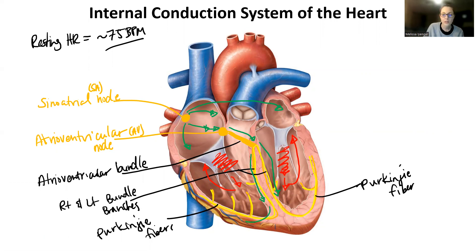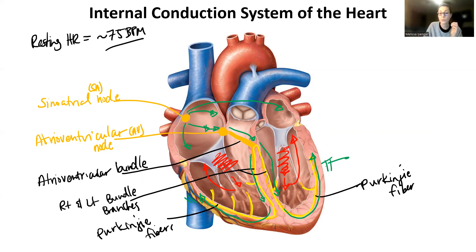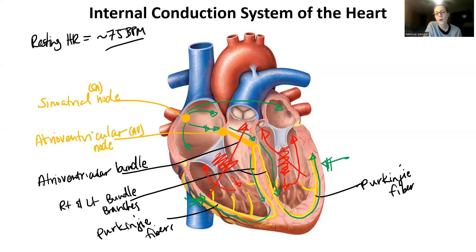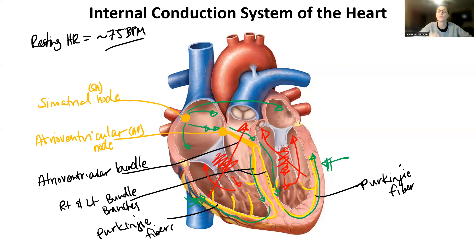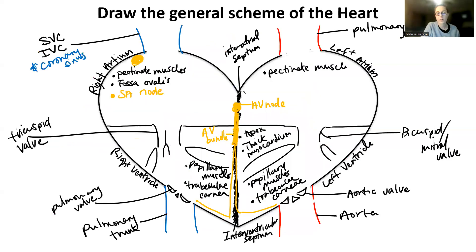The electrical message then continues on the Purkinje fibers, causing the outer wall of the heart to contract. The outer wall gets pushed toward the interventricular septum, squishing blood in both directions toward the top of the heart — which is where our arteries are. This is why the sequence must go from the top, through the interventricular septum, and then up the outside walls: to make sure blood is squeezed back upward toward the arteries. That's our internal conduction system.